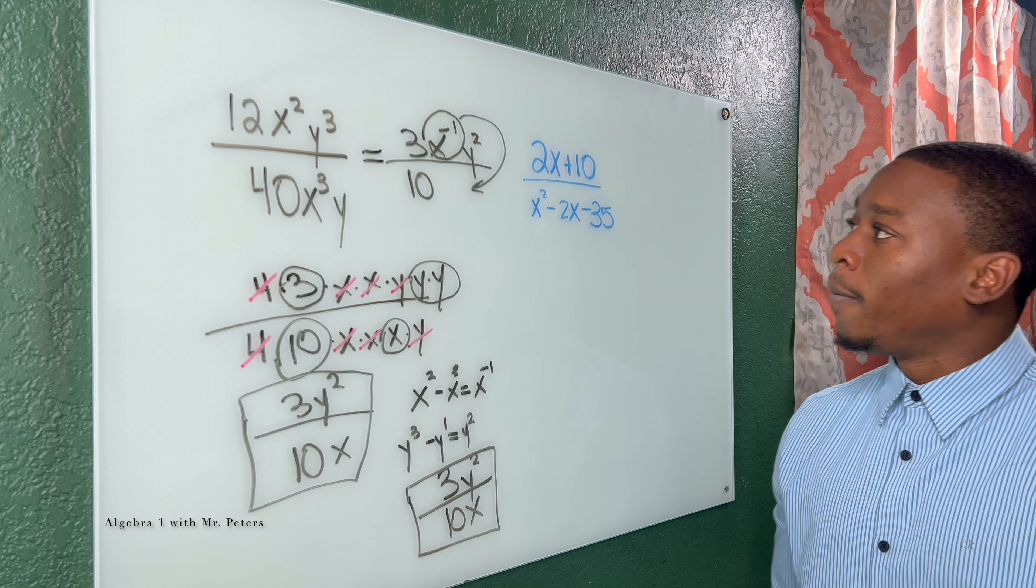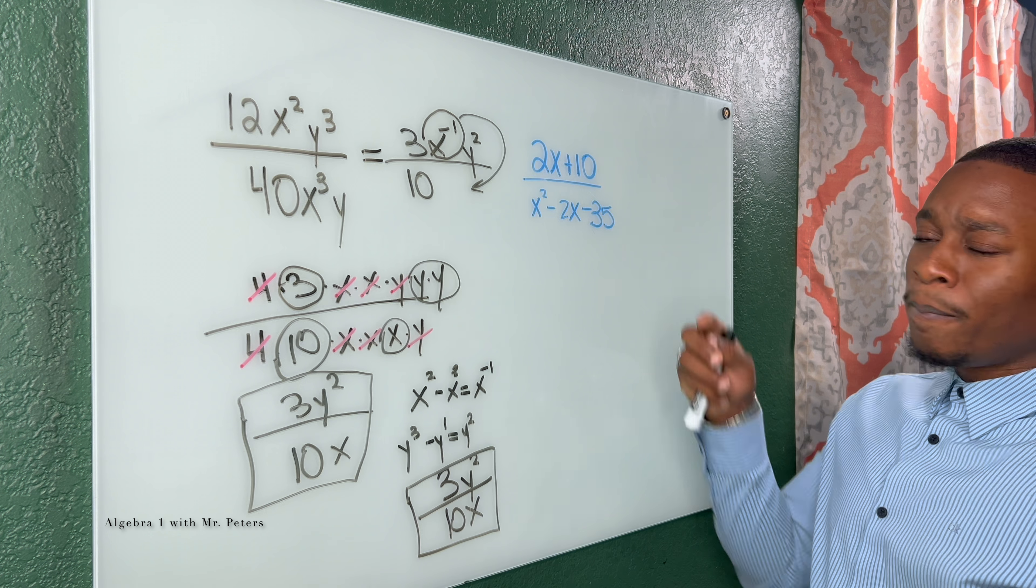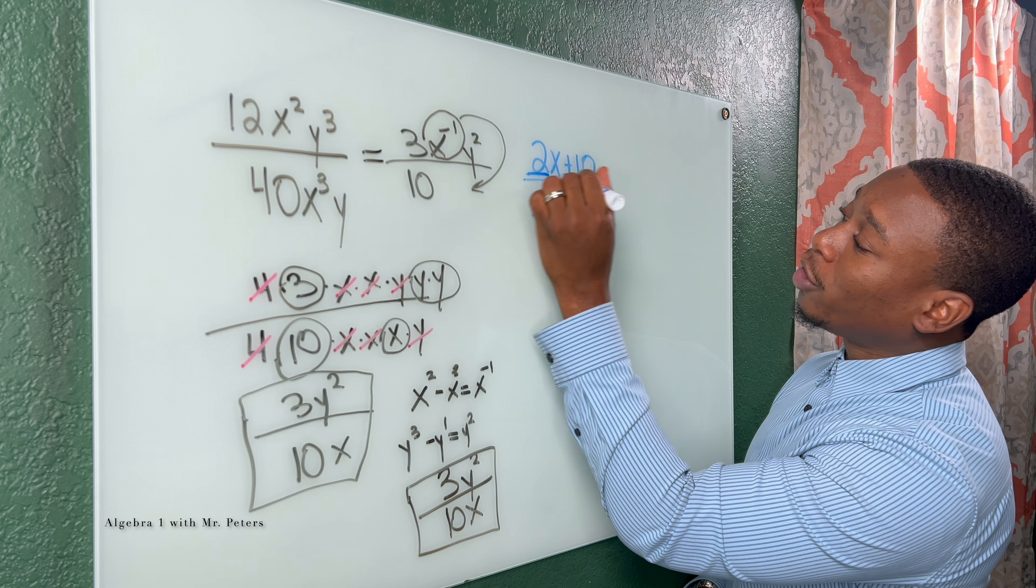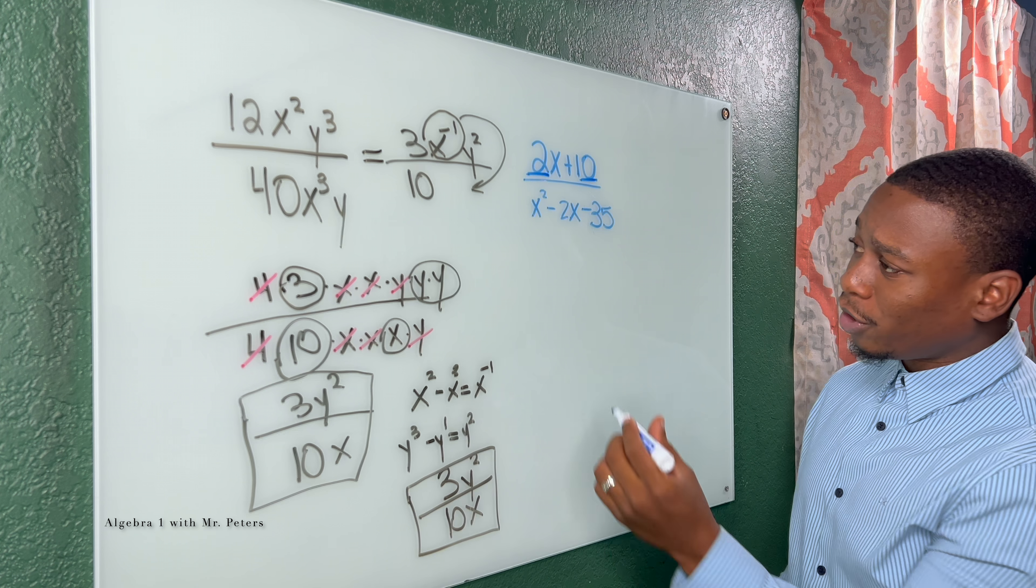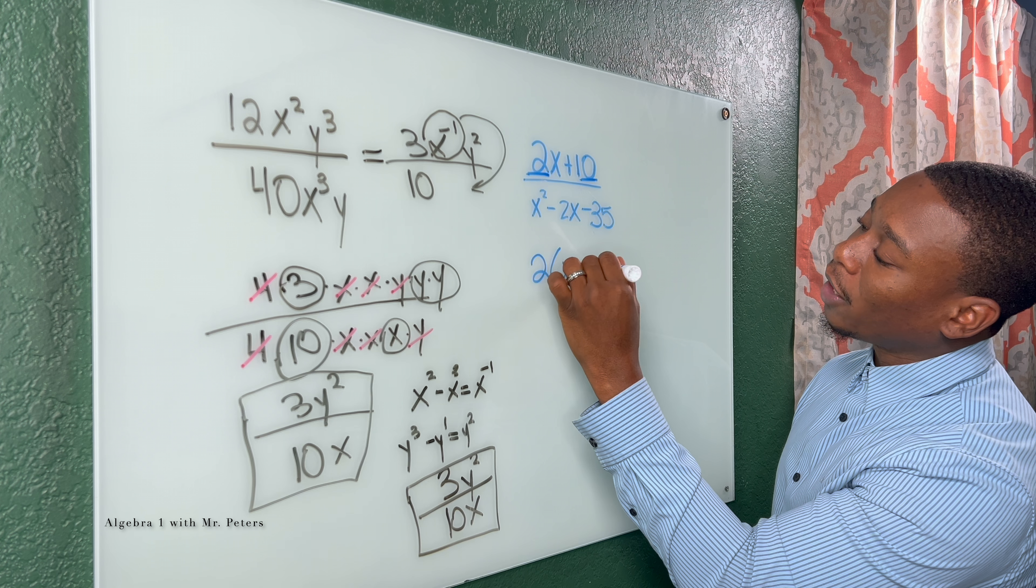Now when we go over to the second example, different factoring rules. So when we look at this numerator, only way we could simplify this is by the greatest common factor. So I could divide 2 and 10 both by 2. So when I pull that 2 out, I'm left with x plus 5.